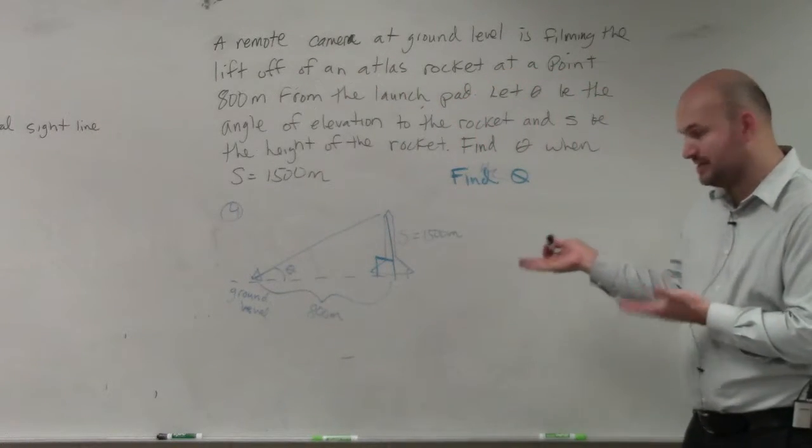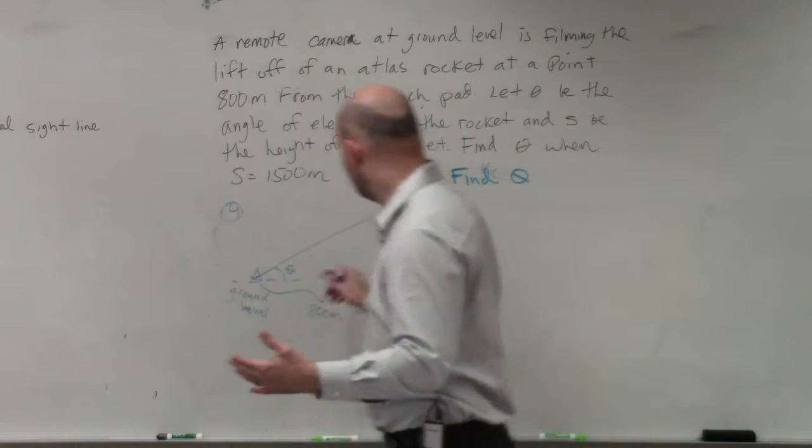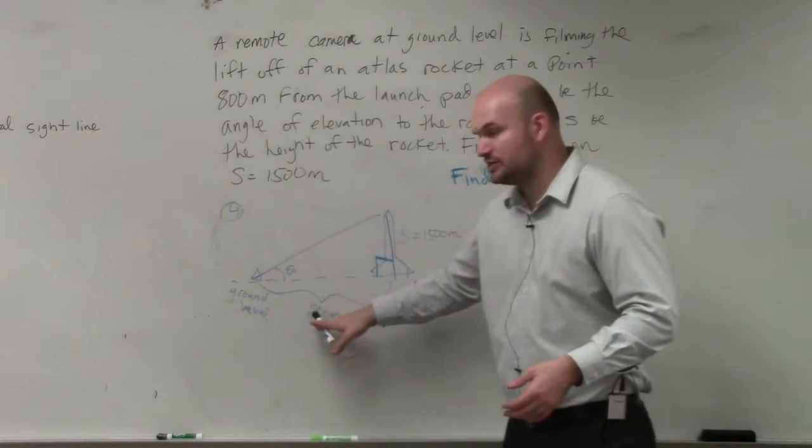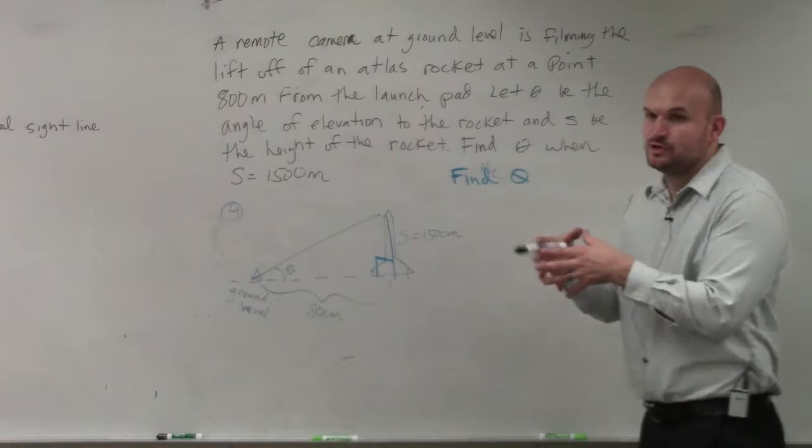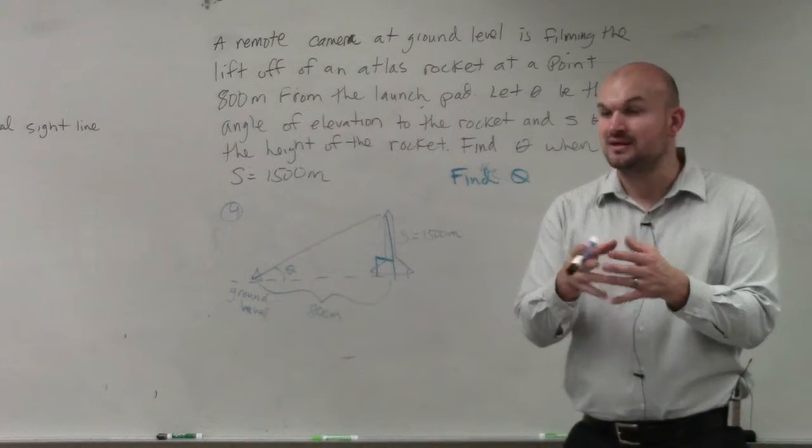We have our opposite, and we have our adjacent. So which trigonometric function? Here's your right triangle, here's theta, opposite side, there's your adjacent side, and that's your hypotenuse. So we have opposite over adjacent. Which trigonometric function deals with opposite over adjacent? Tangent.